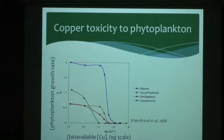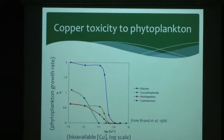That 10⁻¹¹ molar threshold for copper toxicity is not related to total copper concentration but to the chemical form copper is in. Iron and copper represent two different ends of the spectrum: iron is a limiting nutrient with global ocean-scale effects on the carbon cycle, while copper has more of a local effect in the environments I look at.